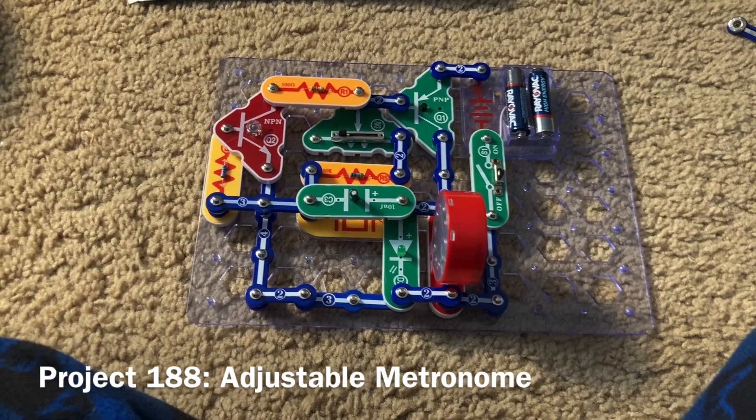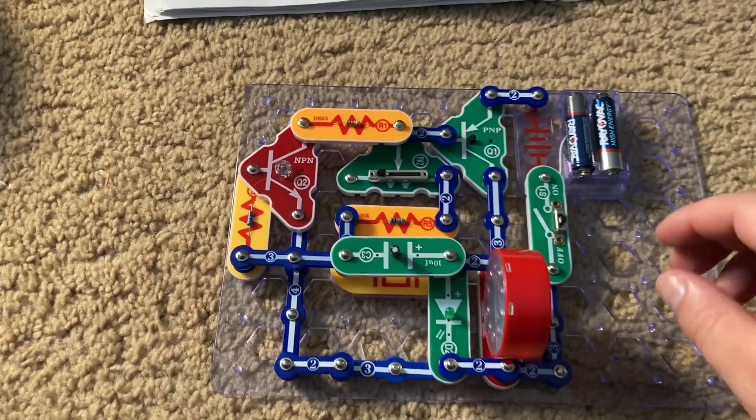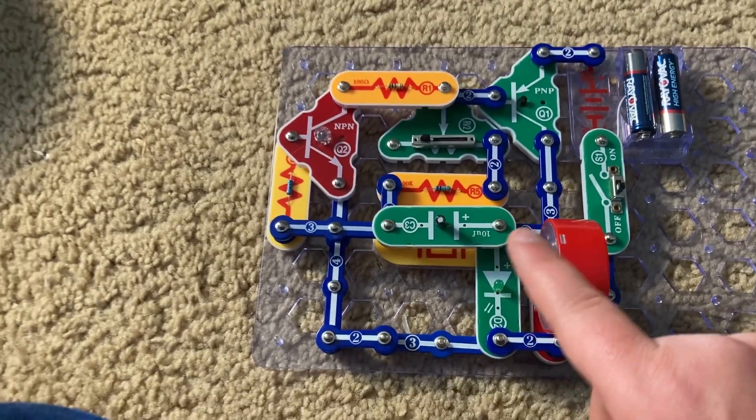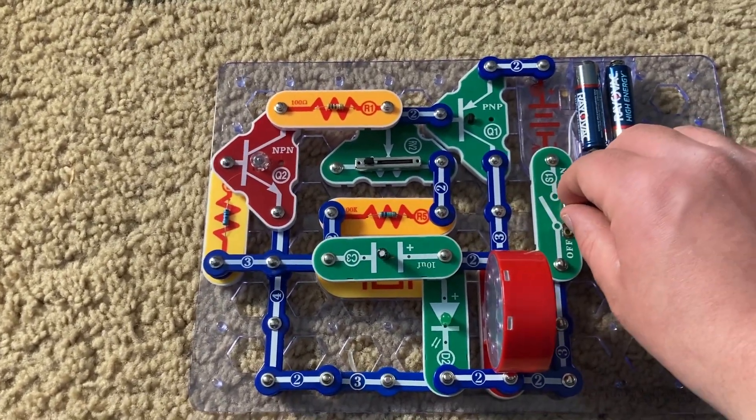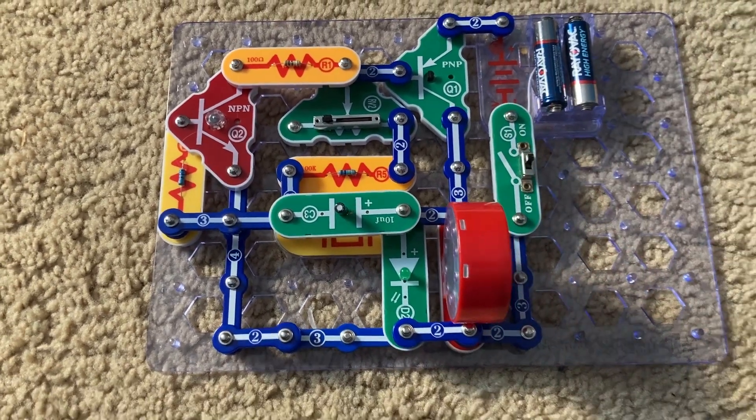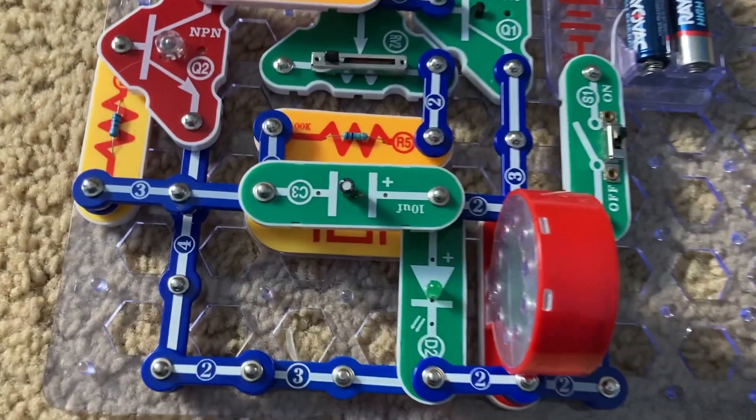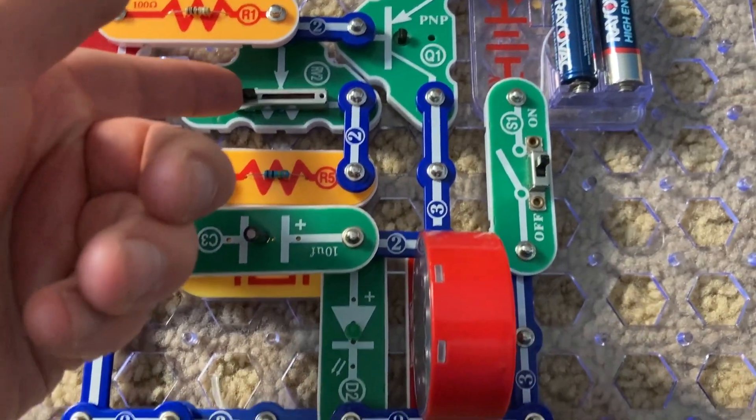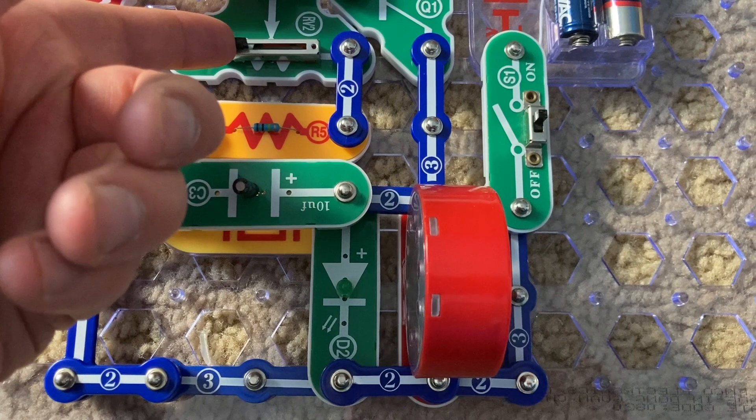This project is adjustable metronome. I place the C3 capacitor over the whistle chip with the positive end on the right, facing right. And then when I turn on the slide switch, you'll hear a clicking sound as the LED flashes. And then you can adjust the rate of the clicking of the sound and the flash of the LED by moving the lever on the adjustable resistor.